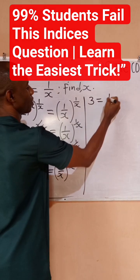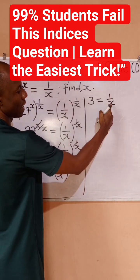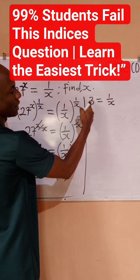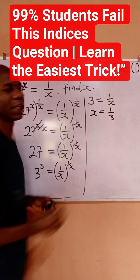When I cross multiply, x will come here and 3 will go there, so I'll have that x is 1 divided by 3, and this is my answer.